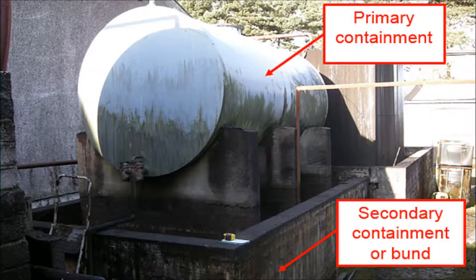A bund is a secondary containment. Its purpose is to contain any leak or spill from the primary containment. In this photograph, the tank is the primary containment, and the wall surrounding the tank is the secondary containment.